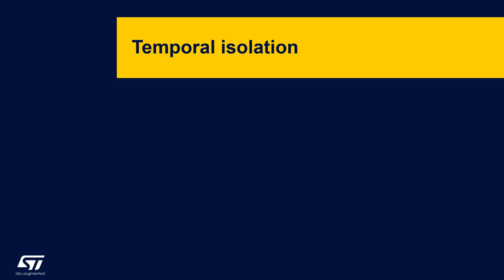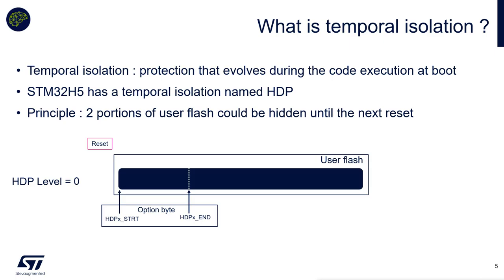Let's start with temporal isolation. What is temporal isolation? It's a protection that evolves during code execution. On the H5, the temporal isolation is called HDP. The principle is two portions of user flash that can be hidden until the next reset. When you boot at reset time, you are at HDP level 1. You can define via option bytes a portion of the user flash.